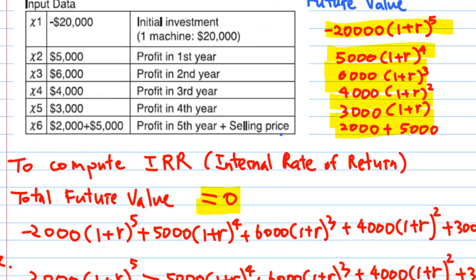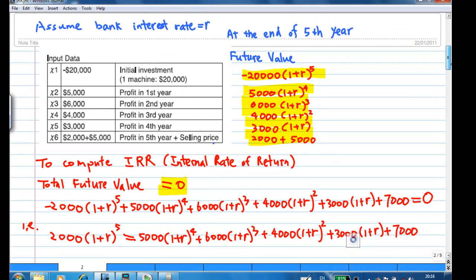Now to evaluate the internal rate of return, this has to do with the future value of the investment at the end of the fifth year. The future value of withdrawing $20,000 from the bank to make the investment is minus $20,000 times (1 + r) to the power of 5, where r is the bank interest rate. When you withdraw $20,000 from the bank, you not only lost $20,000, you also lost the future interest. That is why the total cost is $20,000 times (1 + r) to the power of 5.